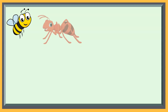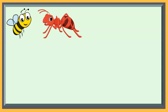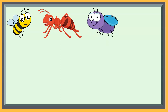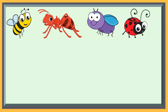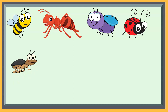A bee is one type of insect. An ant is one type of insect. A fly is one type of insect. A ladybug is one type of insect. A beetle is one type of insect.